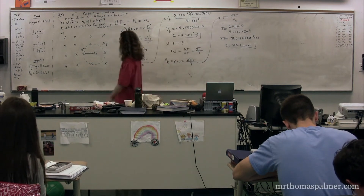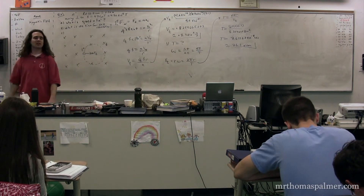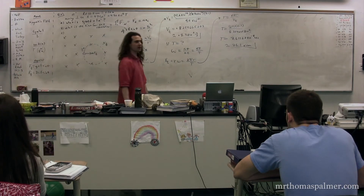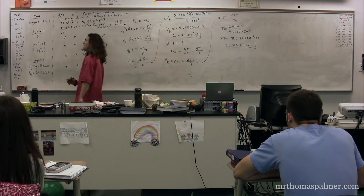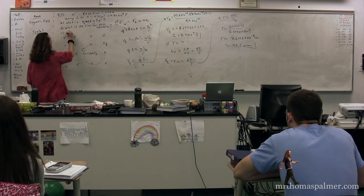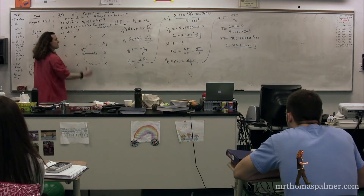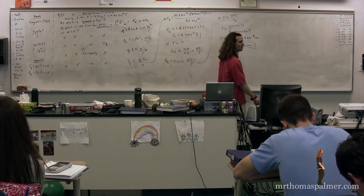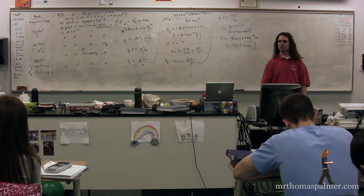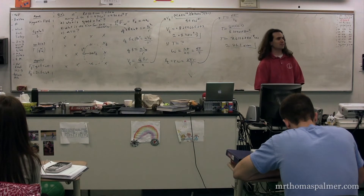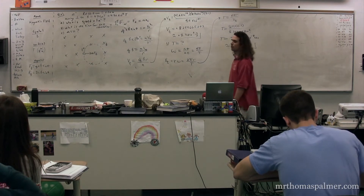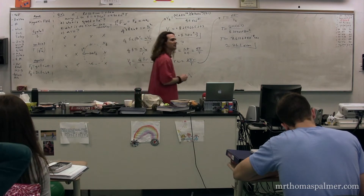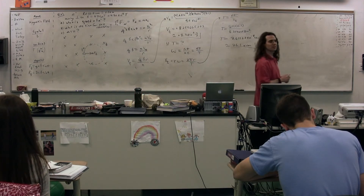Part C. In order to get to this tangential velocity, we had to speed up the electron. In order to speed up the electron, we had to put that electron through an electric potential difference. What electric potential difference did we have to put the electron through in order to get to this velocity? We're looking for the electric potential difference we used to accelerate this electron to this velocity.